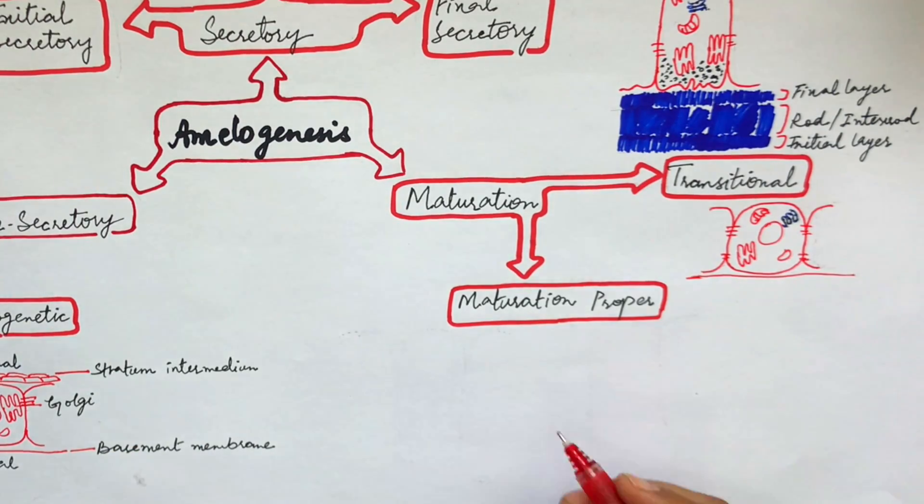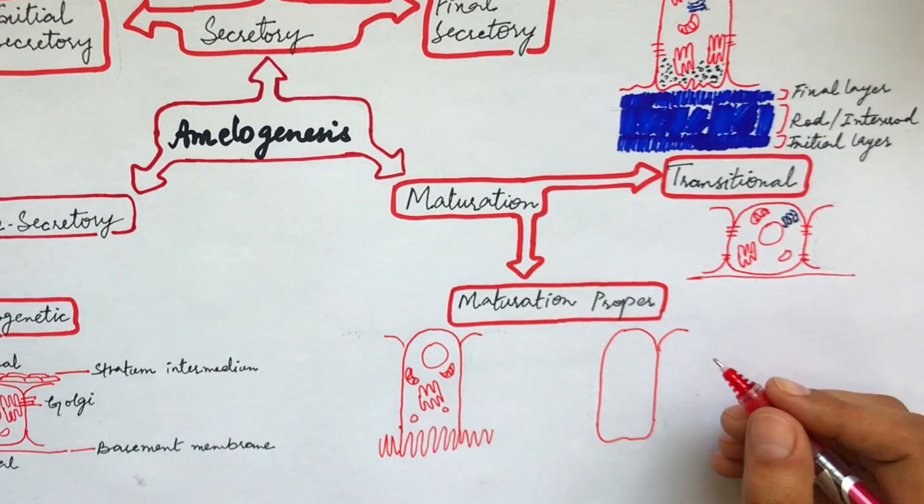In the maturation proper phase, the organic material and water of the enamel matrix is replaced by the inorganic material, and this is accomplished by a process called modulation.